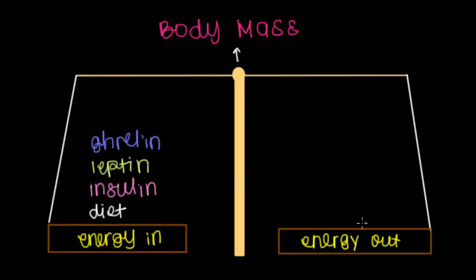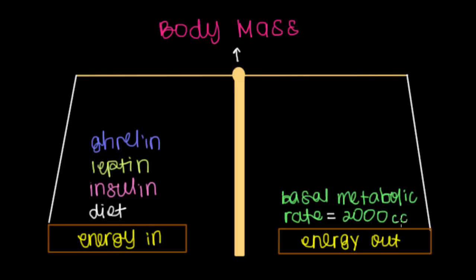Now, the things that we do that get rid of energy, or consume energy, include things like our basal metabolic rate, or the amount of energy we burn just at rest. That comes out to be, in the average person, about 2,000 calories in a day.